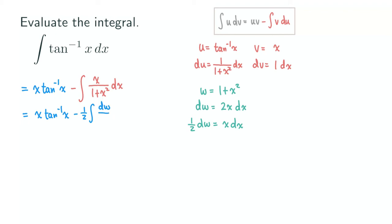What about the bottom? The bottom would actually just be replaced by w, because the bottom is 1 plus x squared. So it's just equal to w. So we have w here. Okay, so integrating this integral here, it's easy, because it's basically just 1 over w. And the antiderivative of 1 over w, right?